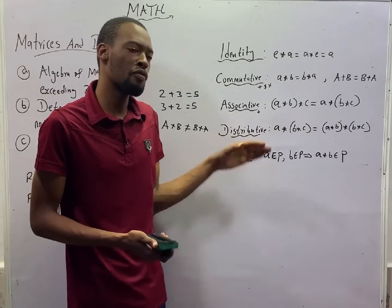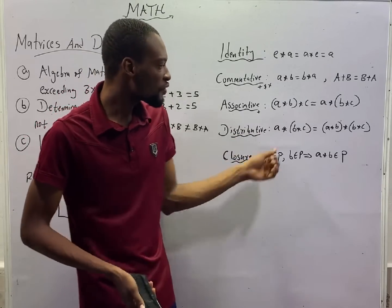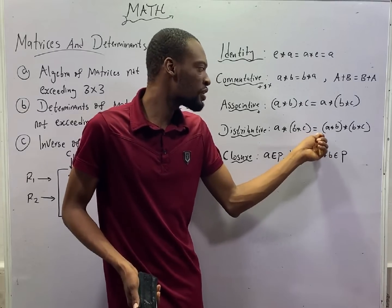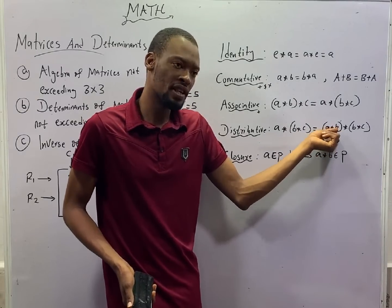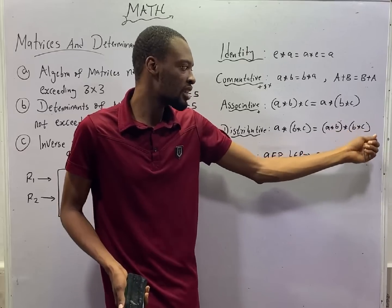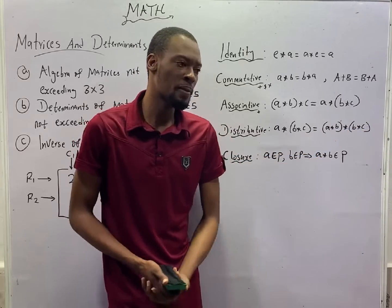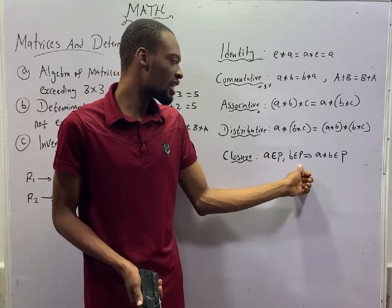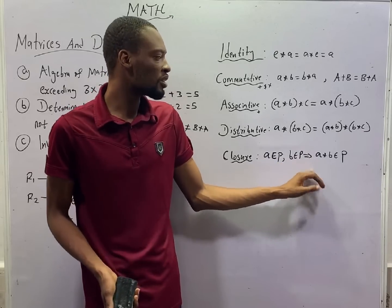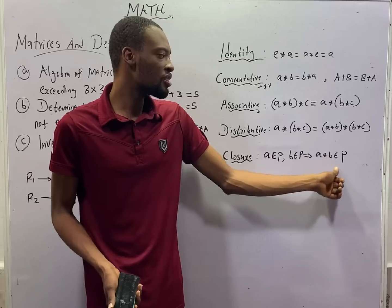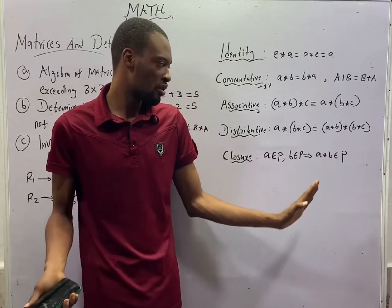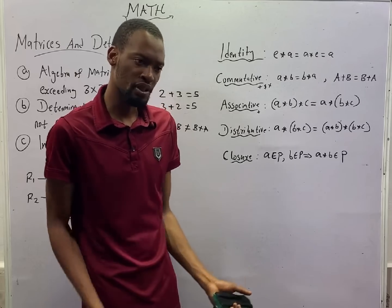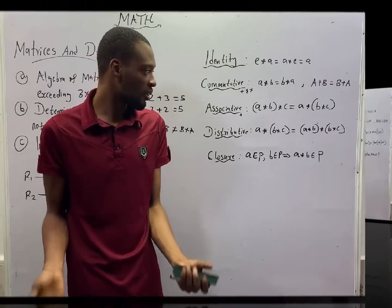Distributive property of binary operations states that a star (b star c) in brackets should be the same as a star b, then star b star c. Closure property states that if a is an element of set P and b is an element of P, then a operation b is also an element of P — it is closed.